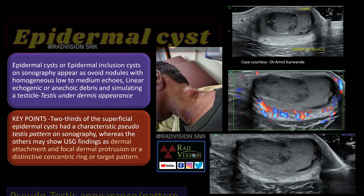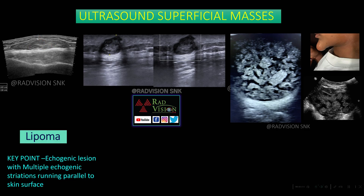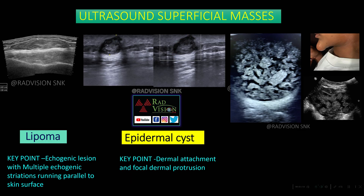Here you can see an echogenic lesion in the subcutaneous tissues with multiple parallel echogenic striations running parallel to the skin surface — this is a case of lipoma. In the adjacent image, there is a well-defined hypoechoic lesion with focal protrusion towards the dermis. Whenever you see a focal dermal protrusion or dermal attachment, one of the common differentials is epidermal inclusion cyst.